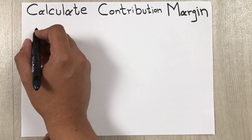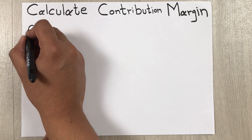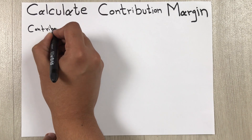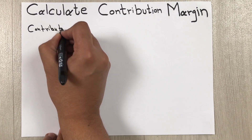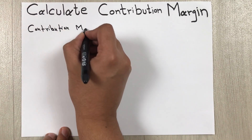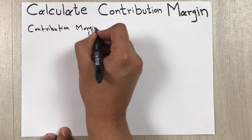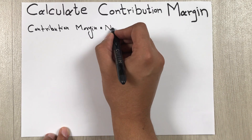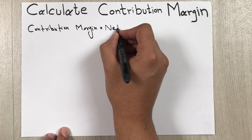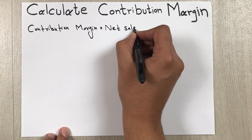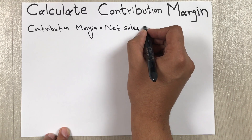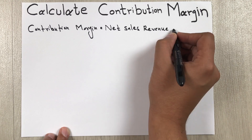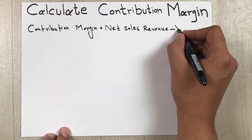Contribution margin is equal to net sales revenue minus variable cost.